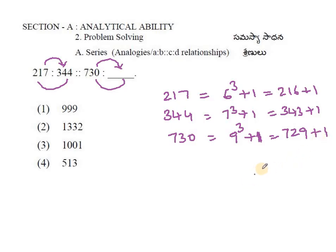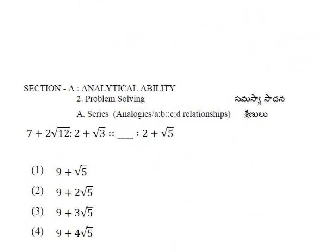Better start now and remember these things. The next number will be 10 cube plus 1. 6 and 7 together, then naturally 9 and 10. 10 cube means 1 followed by 3 zeros plus 1, which is 1001. The correct answer is 1001. This is how we solve this problem.